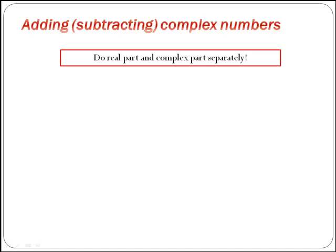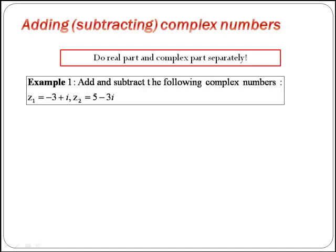Imagine that you are given the following question: add and subtract the following complex numbers. We have z1 as our first number with real part equal to minus 3 and imaginary part equal to 1, and then z2 which has real part equal to 5 and imaginary part equal to minus 3.